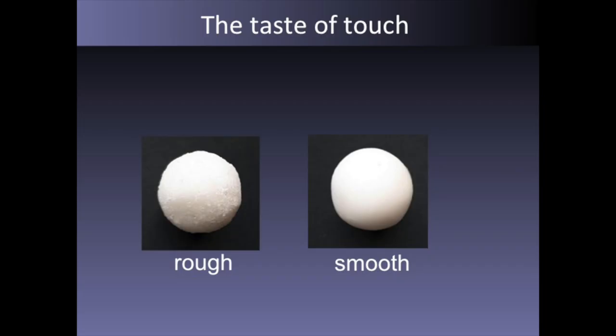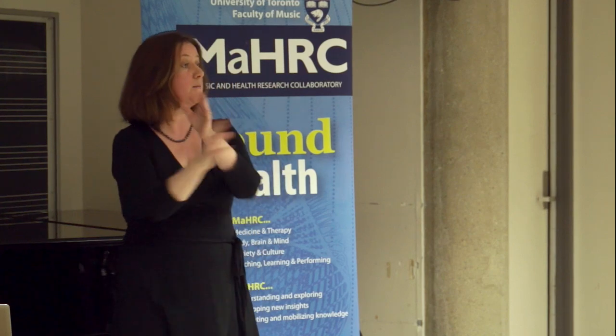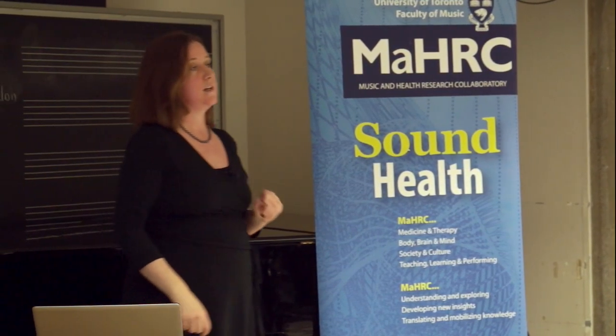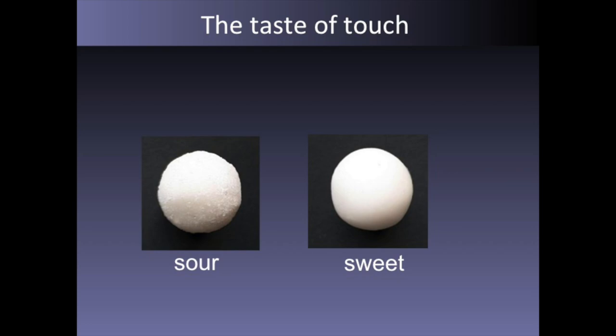This is not just limited to sound and colour — we find it throughout the senses. We recently did a study where we gave participants a sugar sphere made of lemony icing sugar. Half the people got one with a smooth surface, and the other half got one with a rough surface. When we looked at their taste ratings, we found they rated the rough one as significantly more sour and less sweet than the smooth one. All of us have an association between taste and touch.